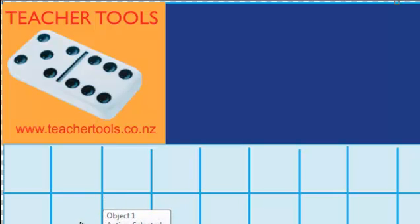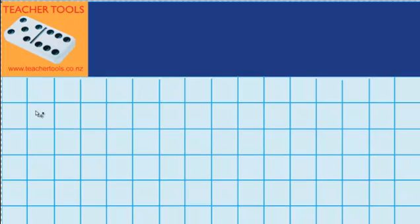Welcome to problems like 23 plus something equals 71. In this lesson I'm going to practice jumping up by a tidy number and then jumping back a little bit to get to the number that I'm wanting to get to.